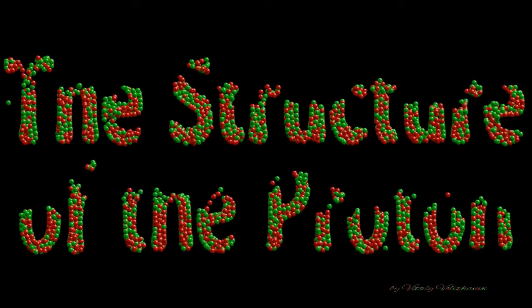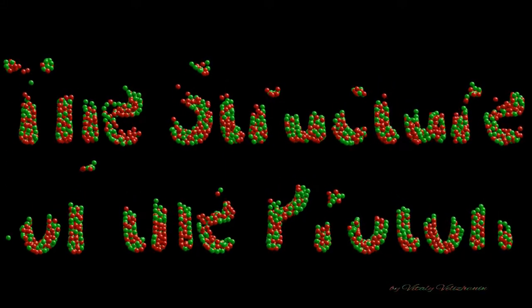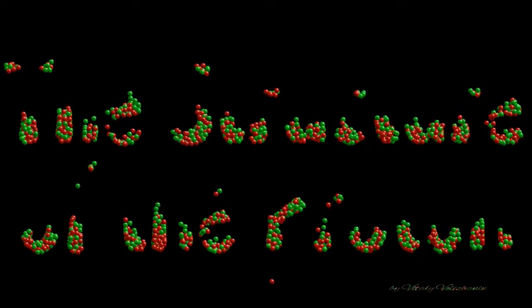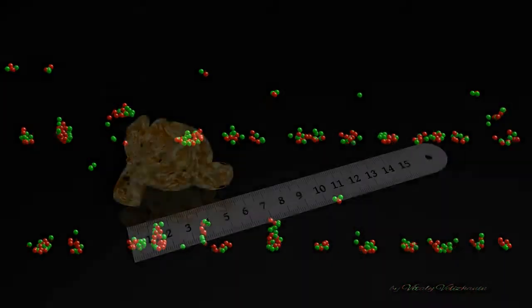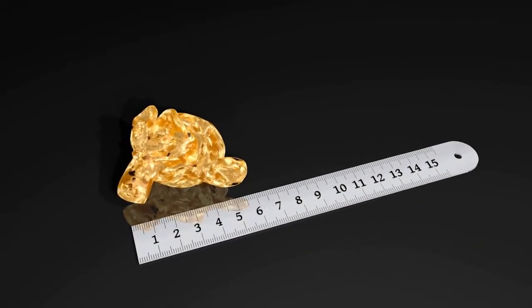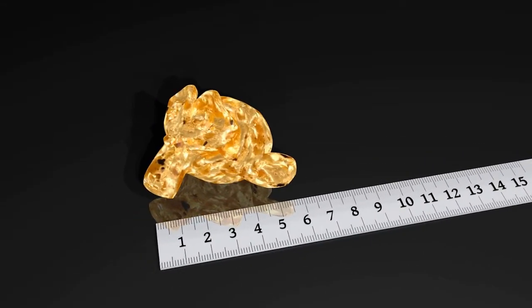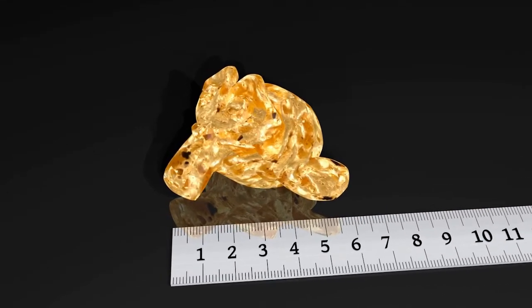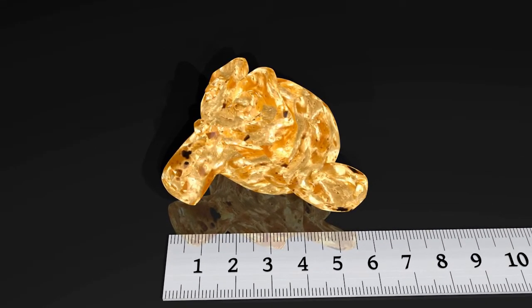As is well known, all the world around us consists of a small number of building elements called atoms. The size of usual objects around us, like this gold nugget, is about several centimeters or meters.